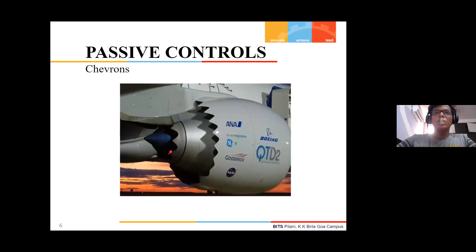These chevrons essentially produce counter-rotating vortices at the edges of the boundary layer, which helps in reducing the cross-stream transport that occurs between the ambient air around the engine and the jet stream coming out of the engine.